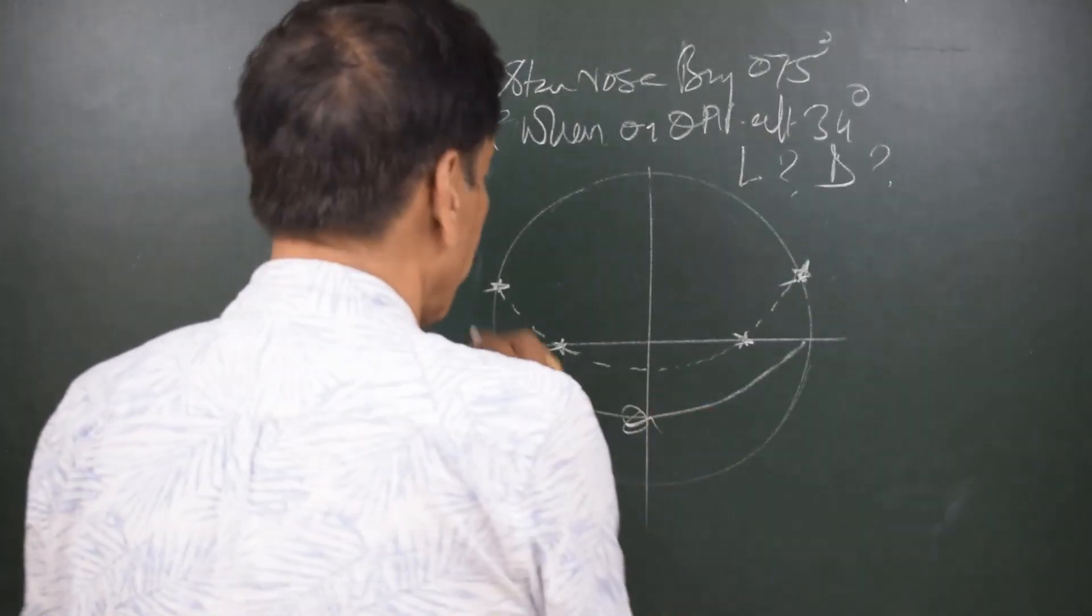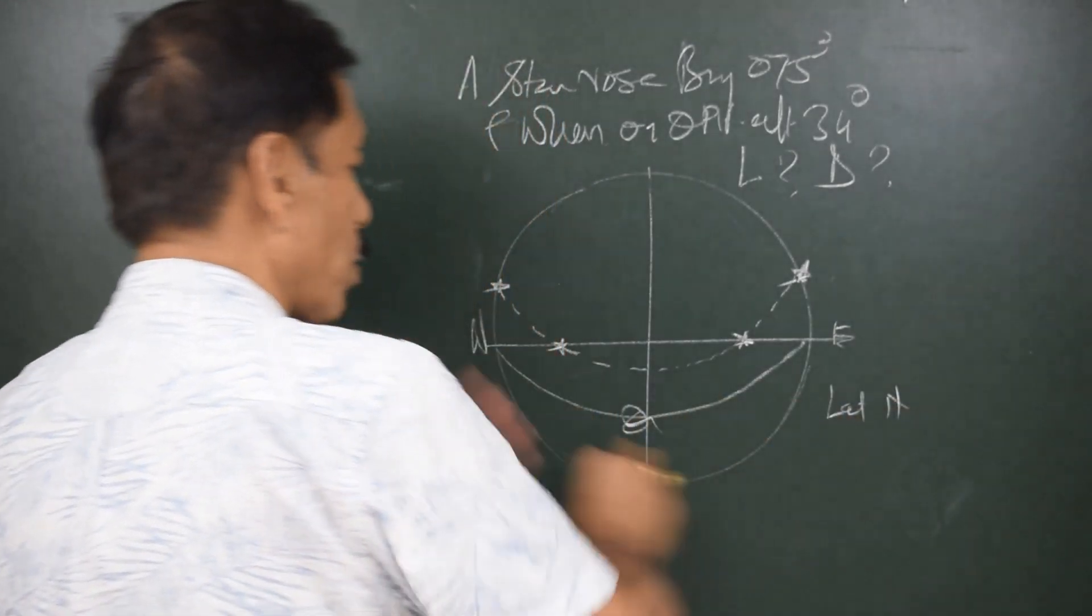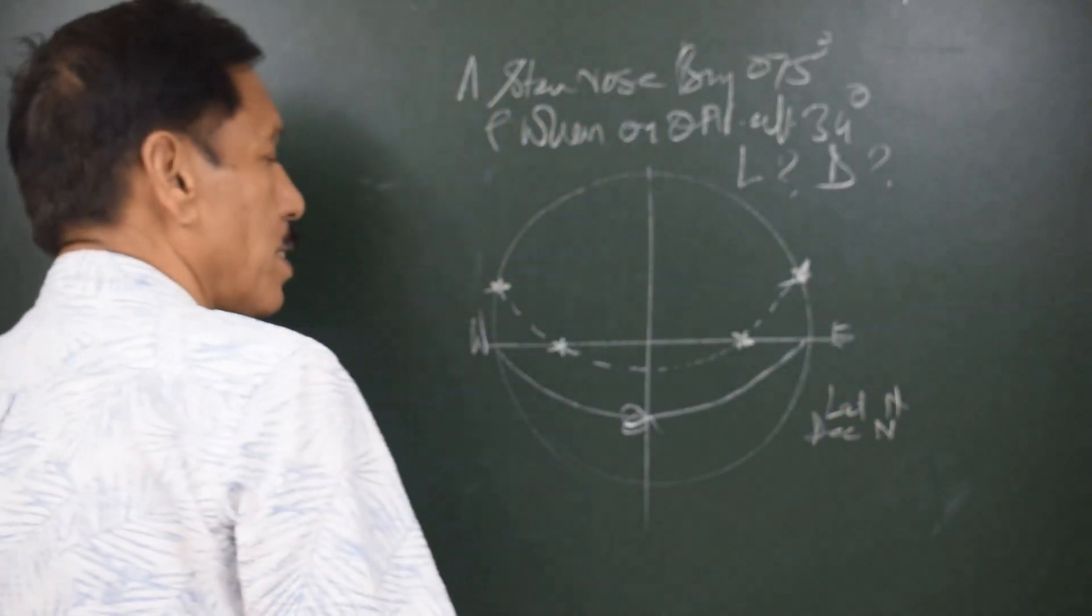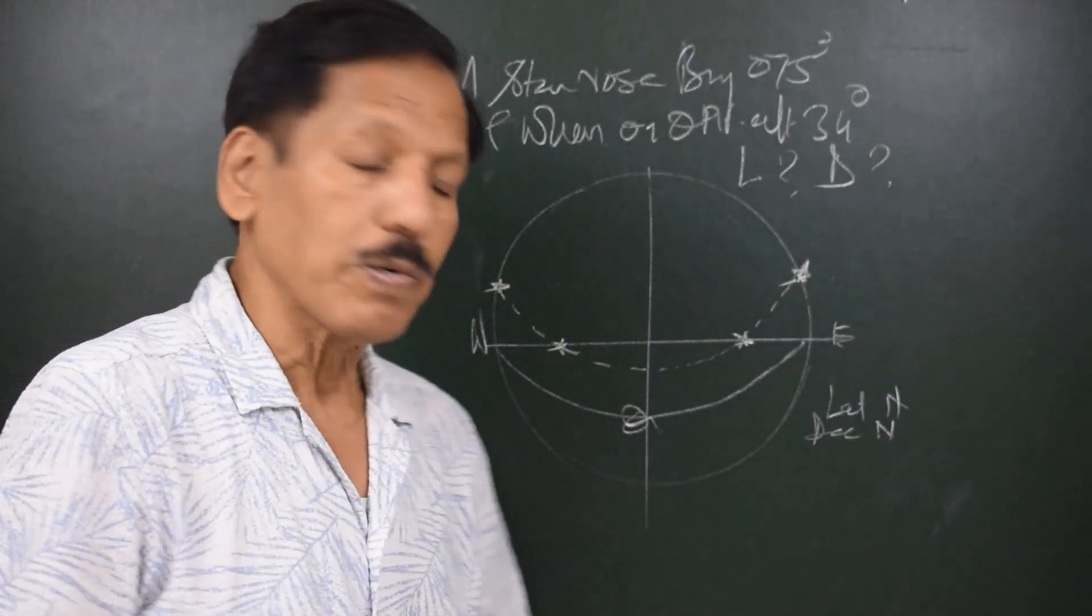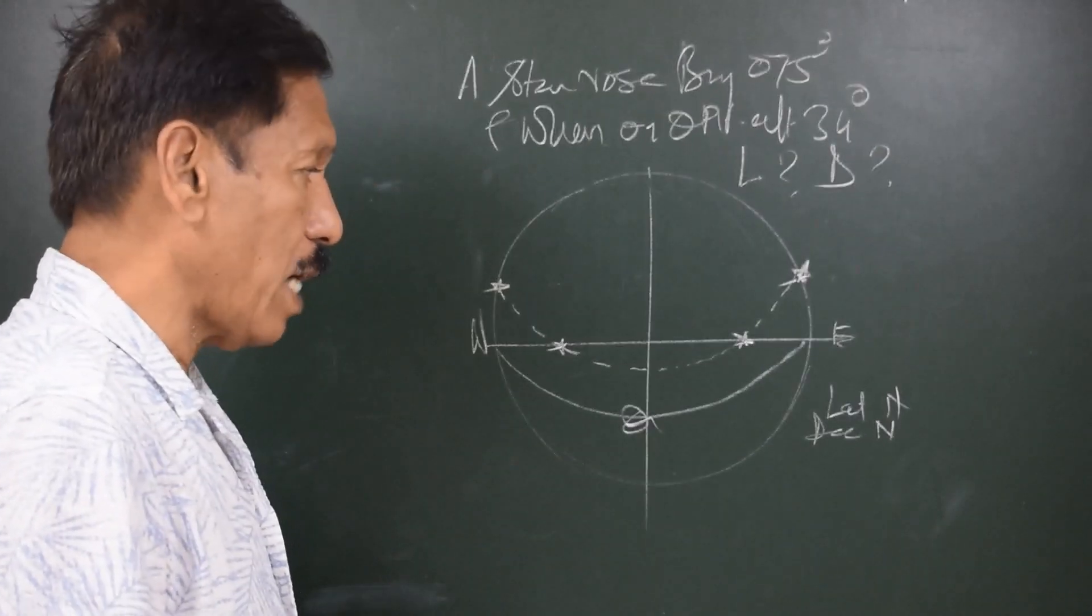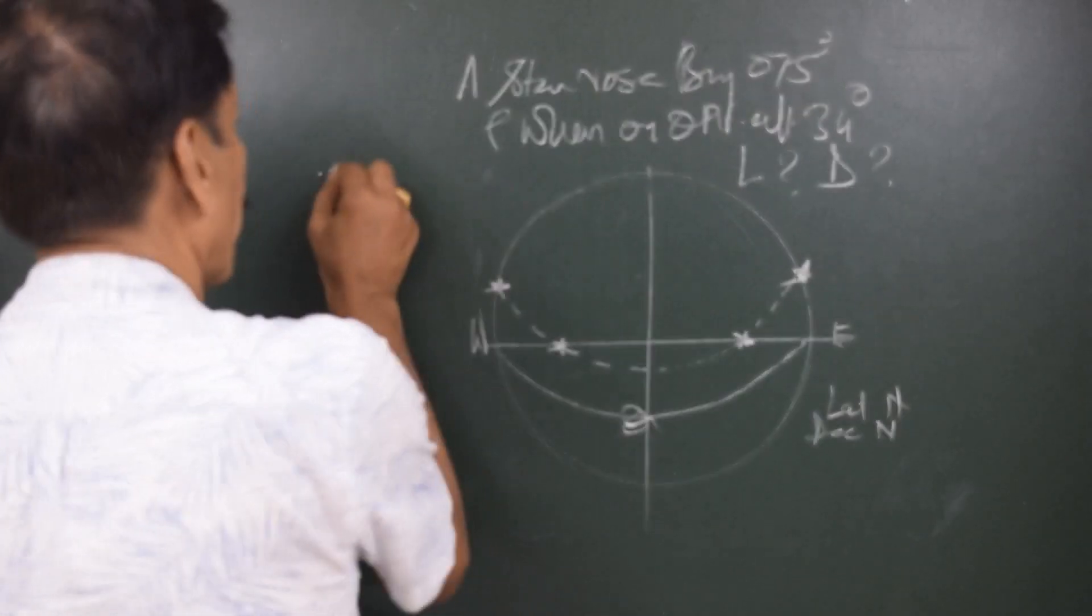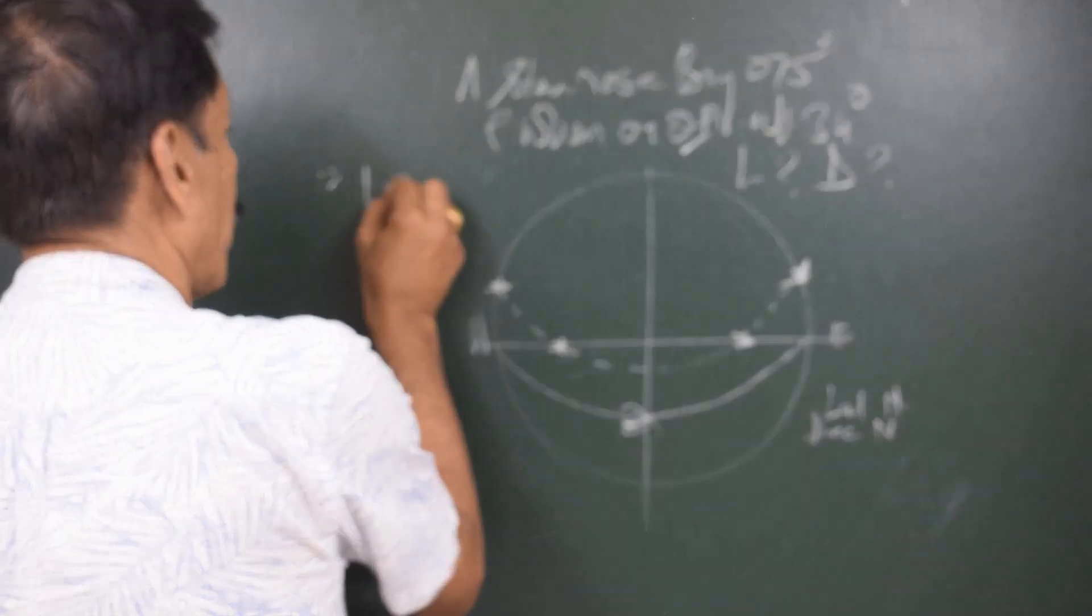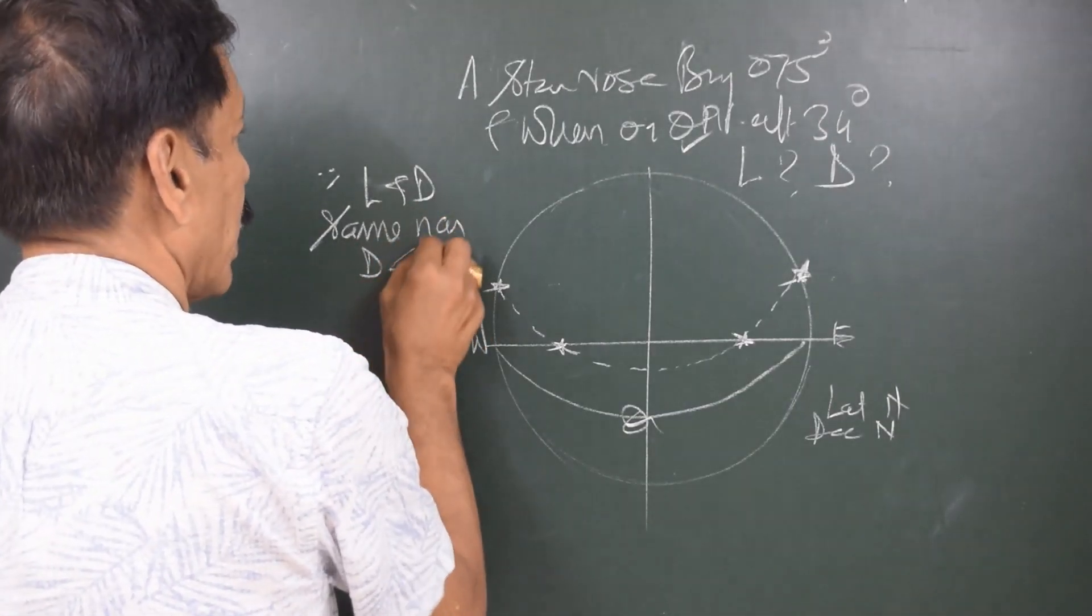And if this is the apparent daily path, this should be the latitude. Looks like latitude is north because equinoxial is going to south and even the declination is north. And this is a typical situation where observer's prime vertical is crossed. Declination and latitude are of same name and d less than l. This is one way of looking at the problem. Another way of looking at the problem is, since the body crosses observer's prime vertical, latitude and declination must be of same name.